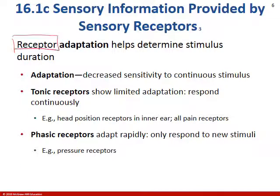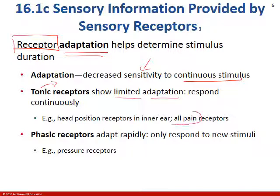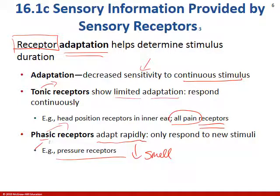We should note there's some receptor variation. Receptor adaptation can happen if you have decreased sensitivity to a continuous stimulus. Some receptors on certain organs and cells show limited adaptation — head position, inner ear, and all pain receptors. Phasic receptors adapt rapidly — think about pressure receptors, also smell. Olfactory is a real phasic receptor: you smell something, and then almost as soon as you perceive it, the smell goes away.